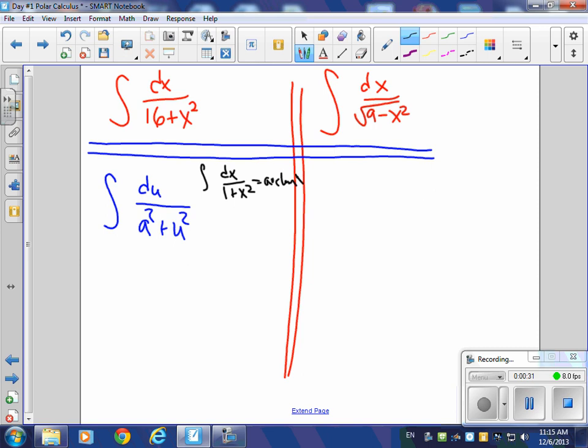The antiderivative of dx over 1 plus x squared, that was just the arctangent of x, right? You remember that? And the antiderivative of dx over the square root of 1 minus x squared is just going to be the arcsine of x. You don't know those? Well, you will. It's on your packet, but you'll want to memorize them for the BC test.